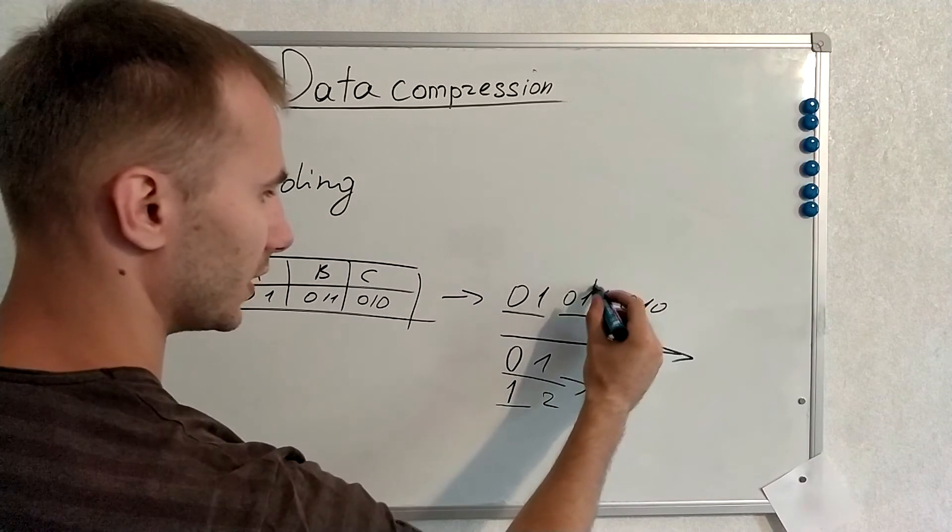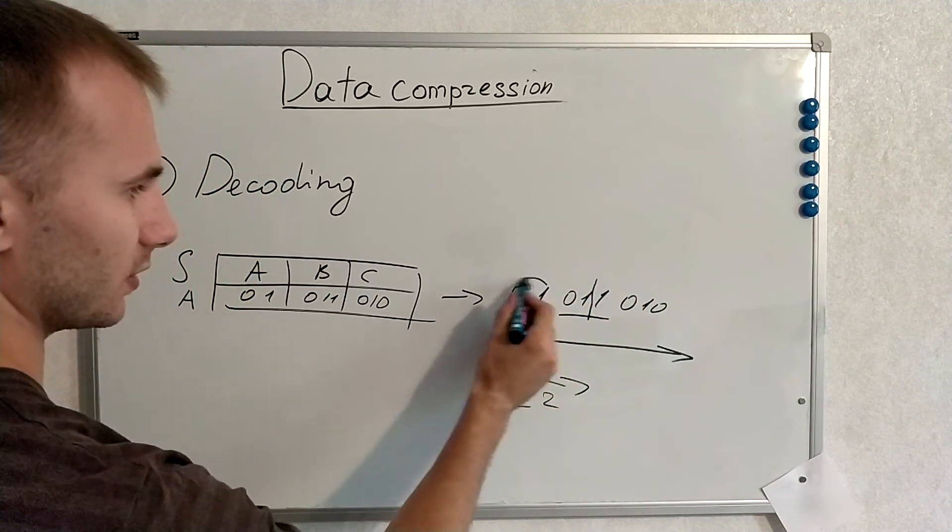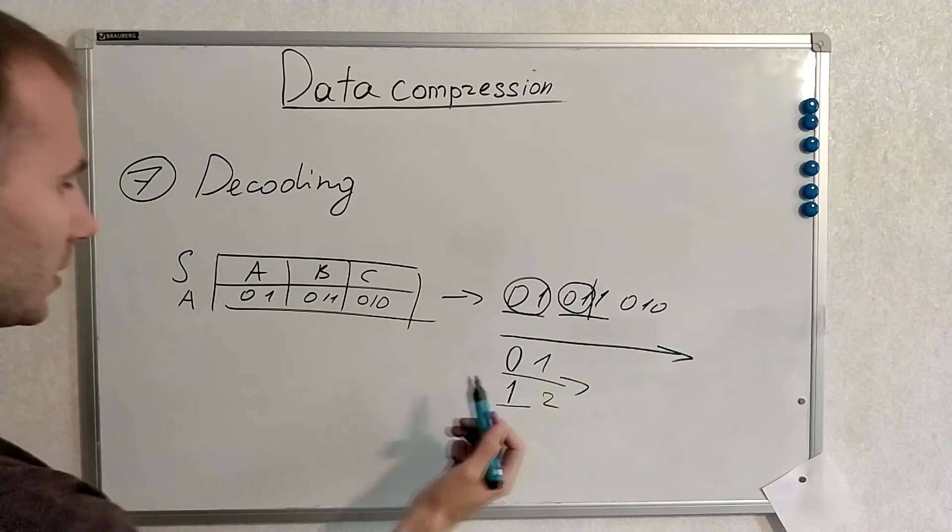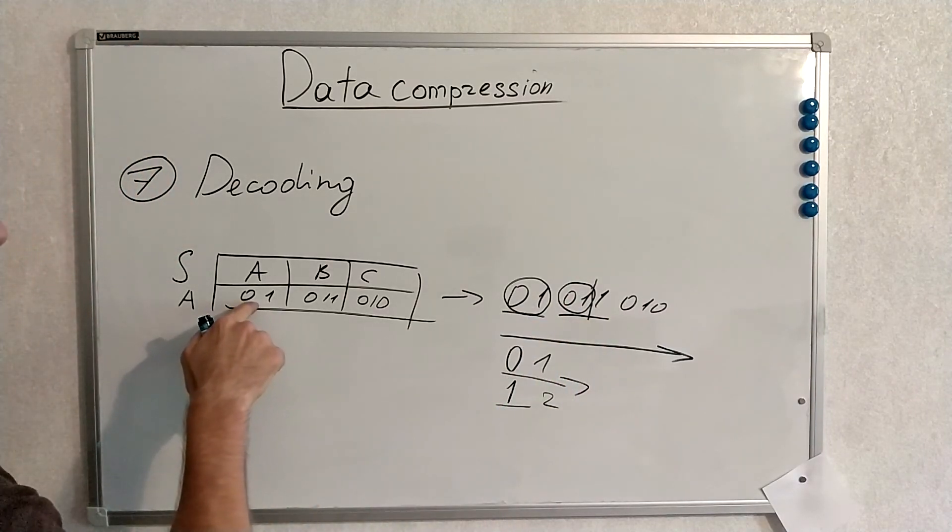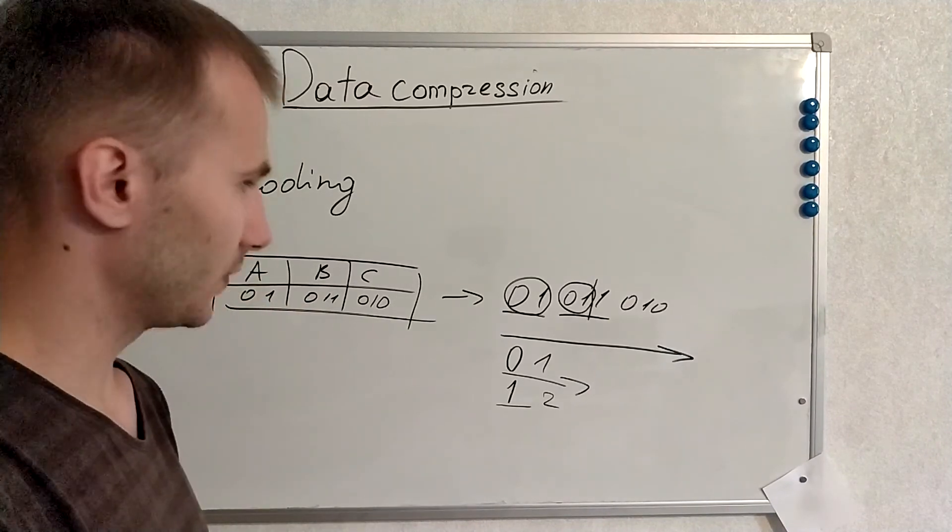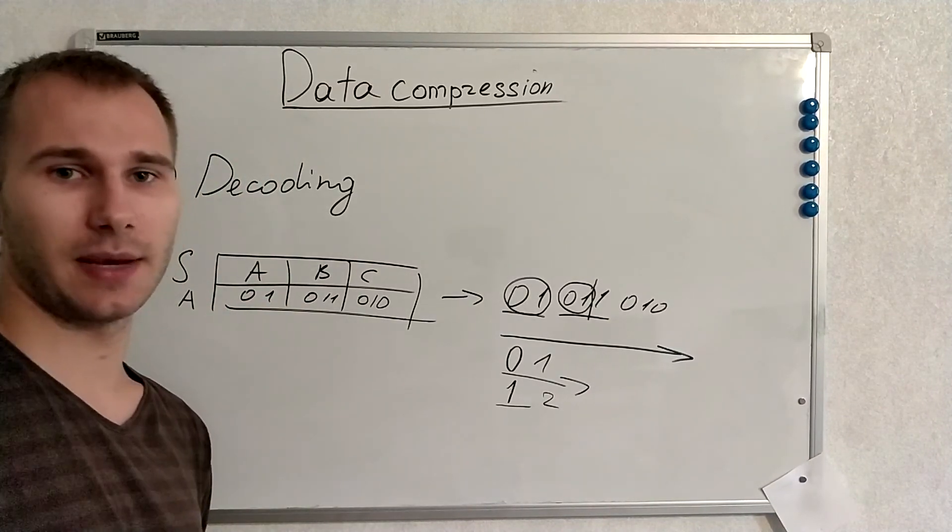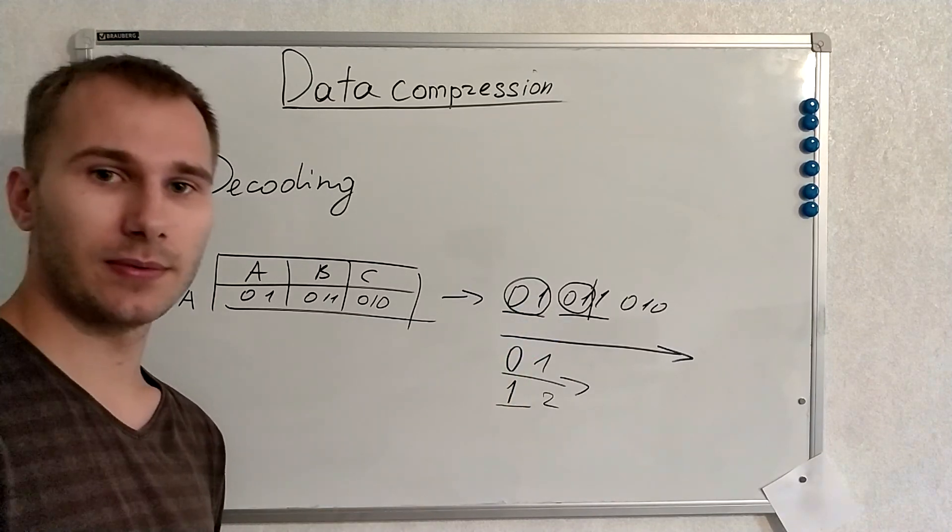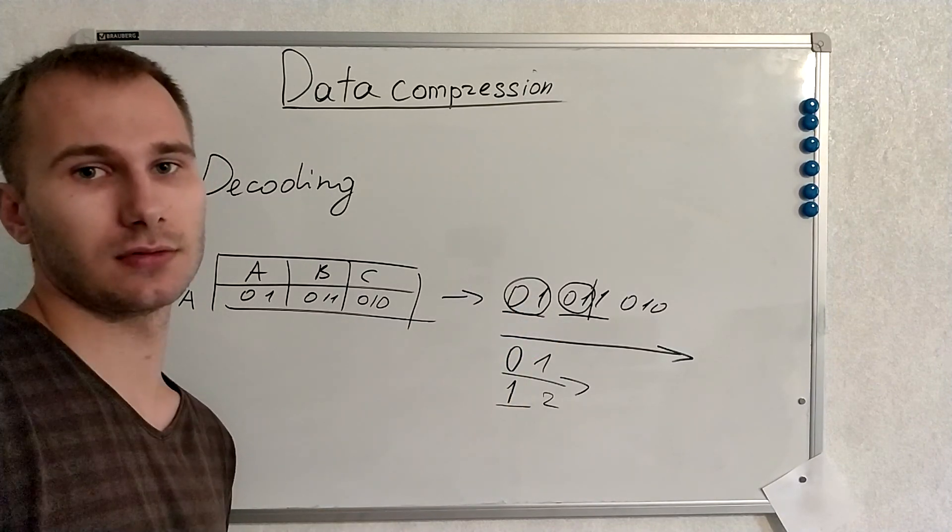But here already we see that this is ambiguous and we can decode our sequence in two different ways. We can decode it as 2A, and understanding why is it happening or what to do with that, we will talk about this in the next video.